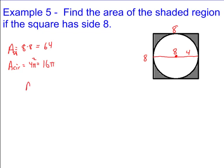So the area of this whole thing is going to be 64, the area of the square, minus the area of the circle, which is 16 pi.